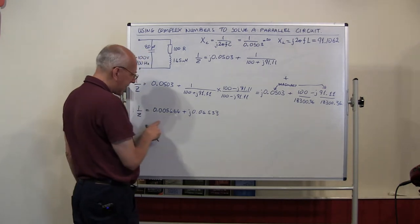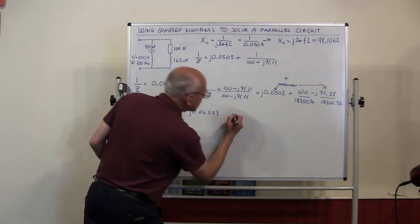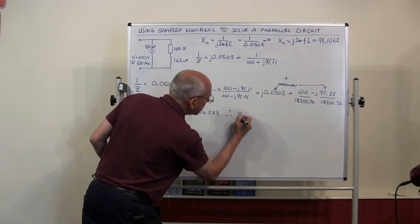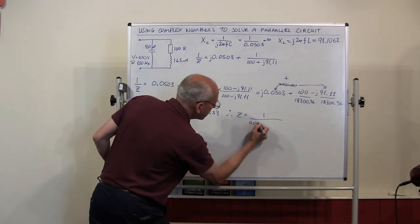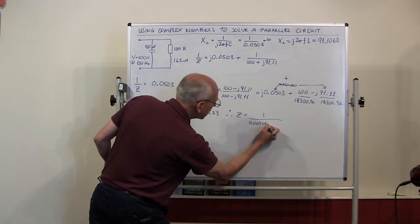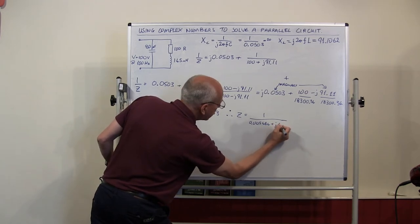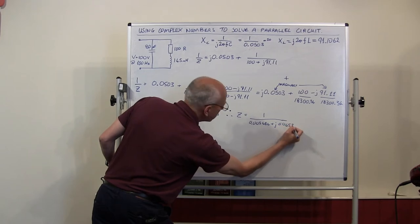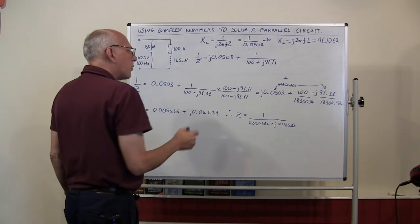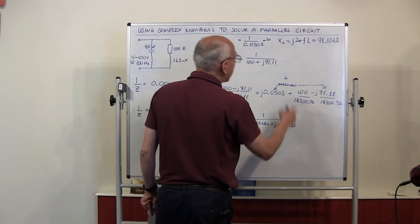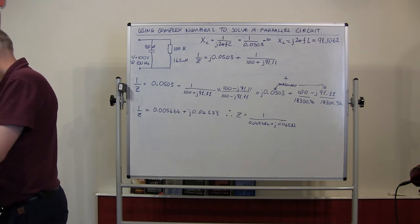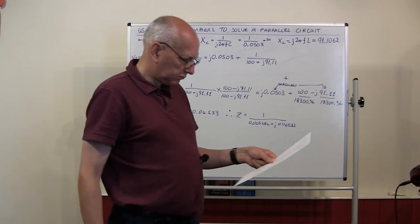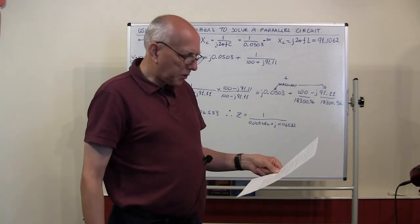Now we're not quite there yet. To find Z we have to invert 1/Z again. Therefore Z equals 1 over (0.000005464 + j0.04533), which means doing the conjugate of this again, as we did before.